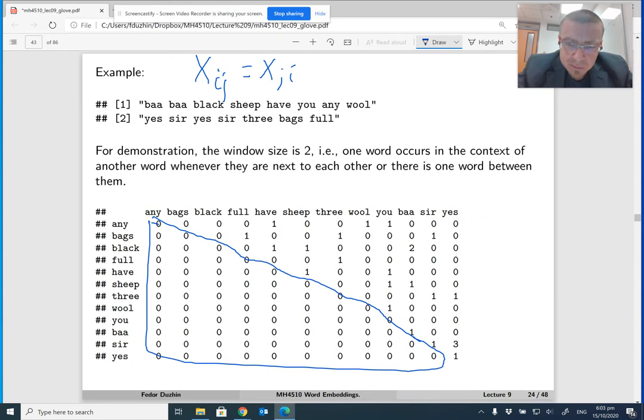Now, so how can we explain, for example, this number 2, so bear and black? So it means that there are two times in this corpus that the words black and bear appear next to each other or at two words apart, right? And it is true. So there is the first pair, bear, black, and there is the second pair, bear, black. So two times they appear in the context of each other.